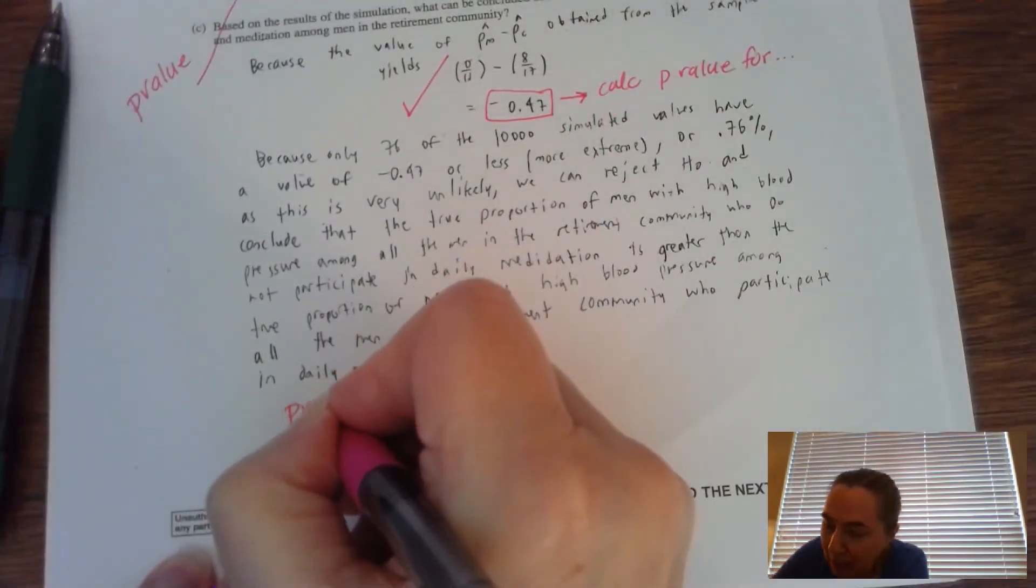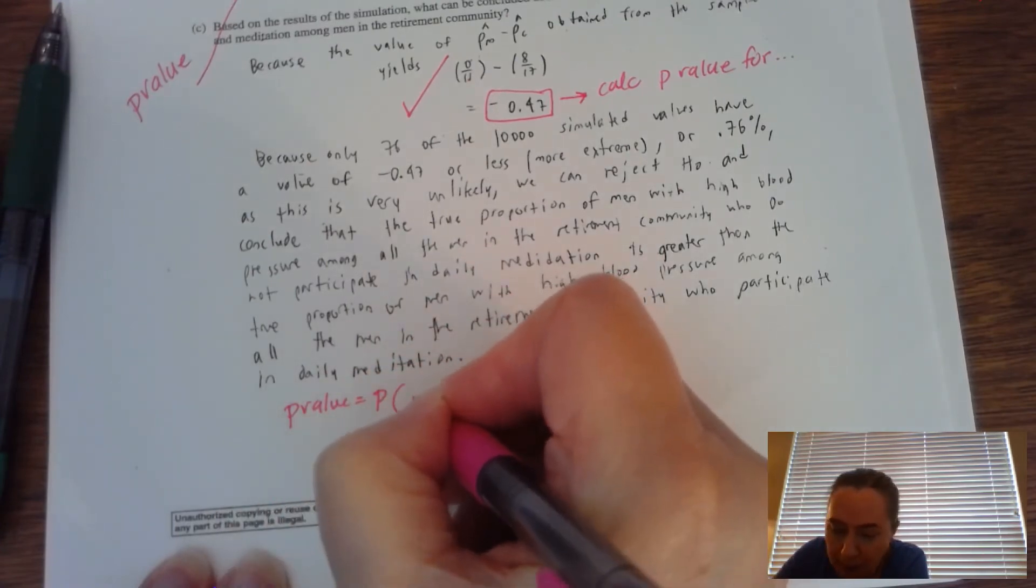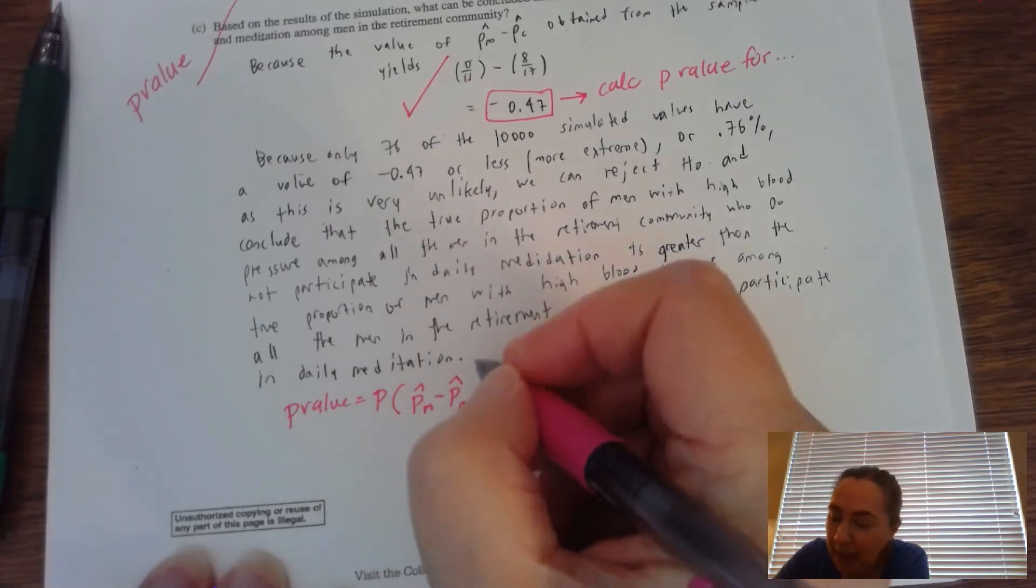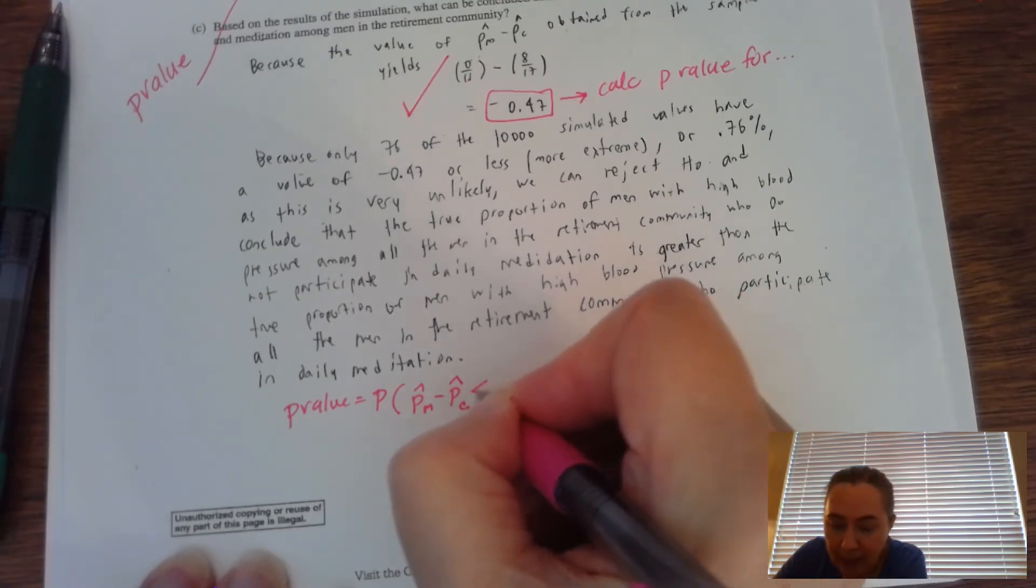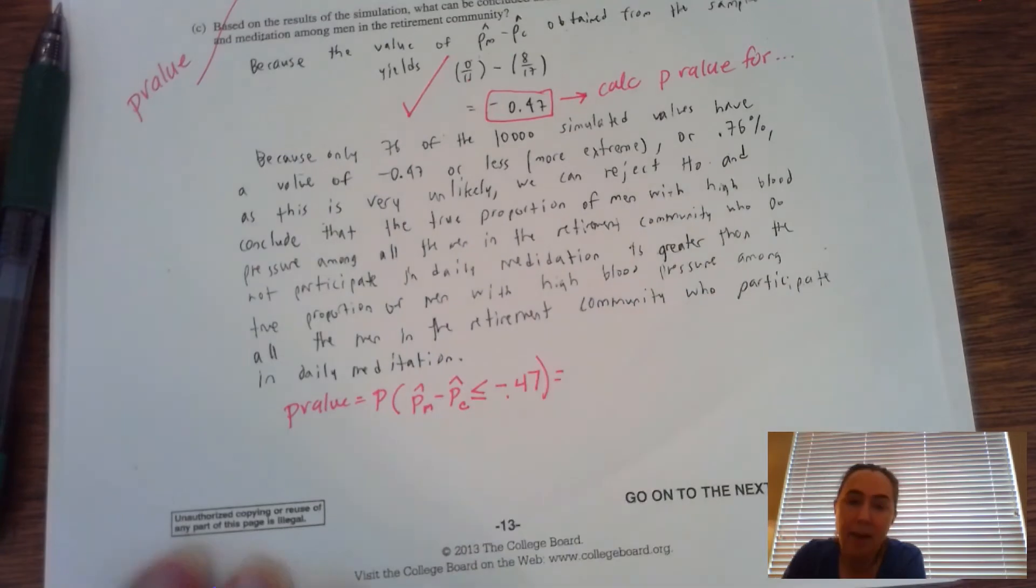We want the P value, which is the probability that our p hat meditation minus p hat control. And remember, we were doing a one tail test on the left hand side that it is less than or equal to negative 0.47. That is what we're looking for.